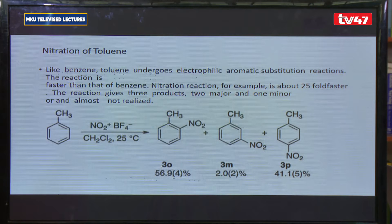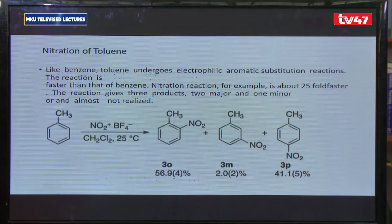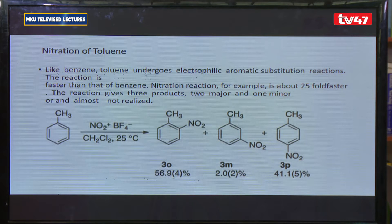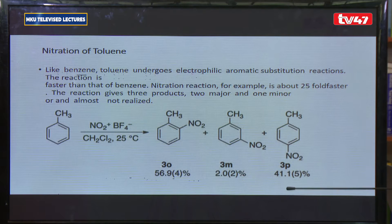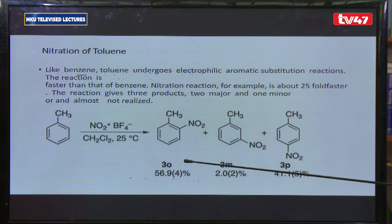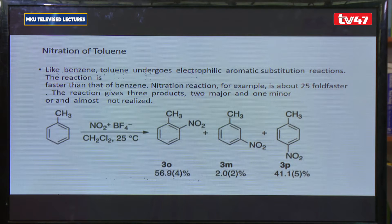Experimental results show that nitration of toluene takes place much faster than the nitration of benzene — the rate is 25 times faster than in unsubstituted benzene. The result is that 59% of the product is the ortho nitro substituent, 2% is meta, and 41.5% of the resulting product is the para substituent, meaning that the ortho substituent is most favored and the meta substituent is almost non-existent.